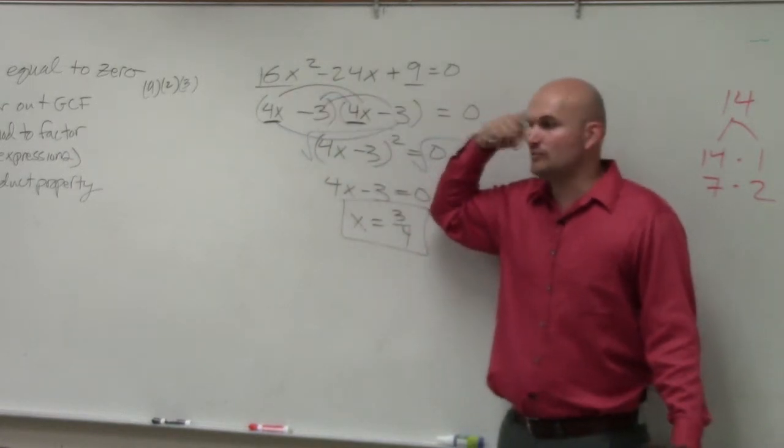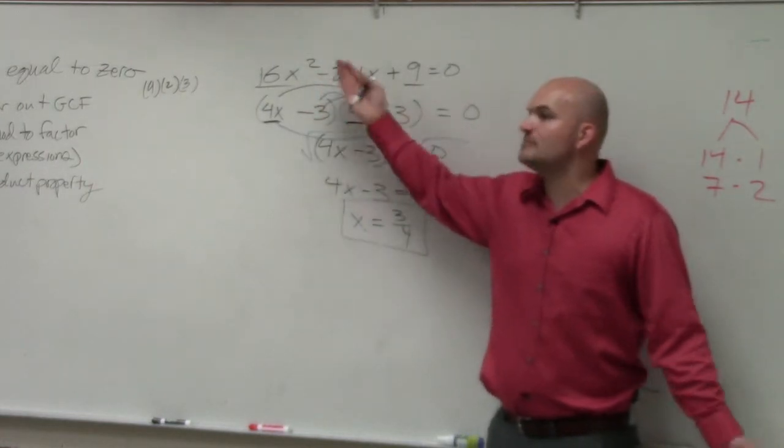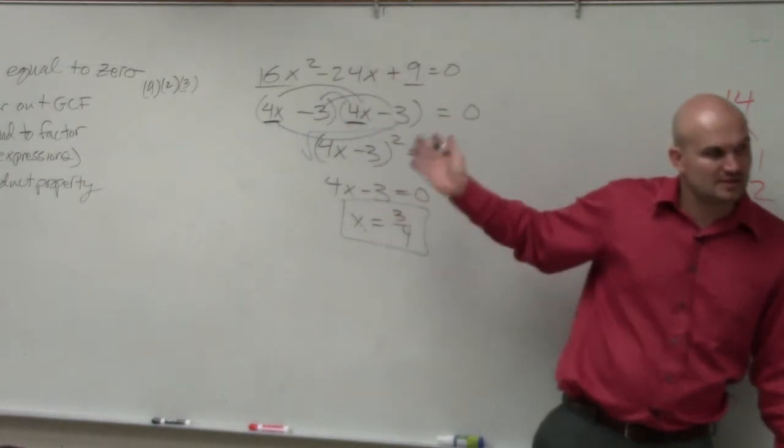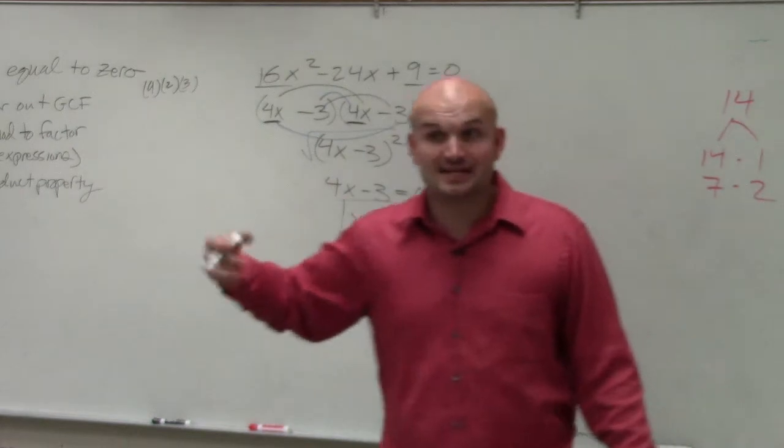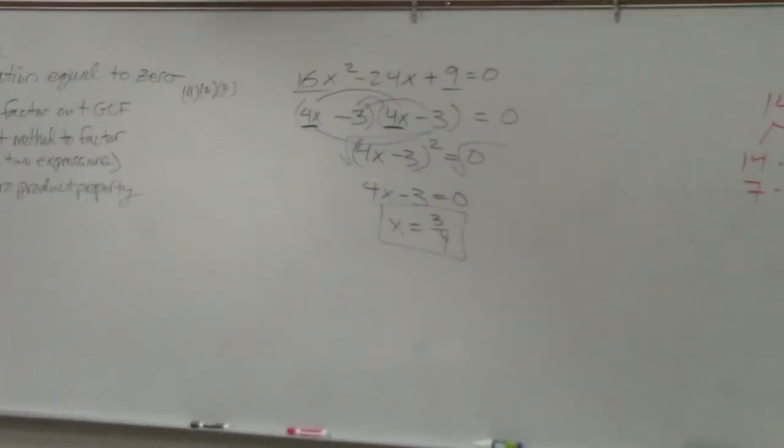Basically, just the general rule, if the middle term's negative, your two factors are negative. If the middle term's positive, your two factors will be positive. Does anybody have any questions for this? So special factoring techniques, you guys can see, can be very, very helpful because it can reduce a lot of time that you guys have.